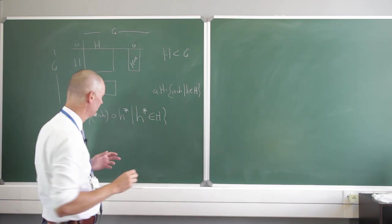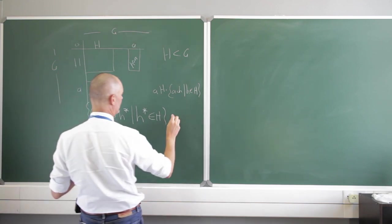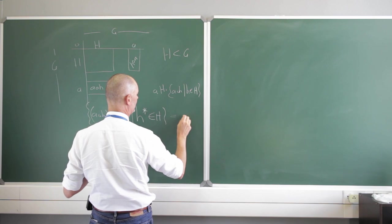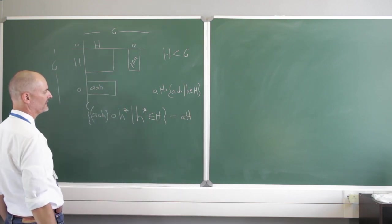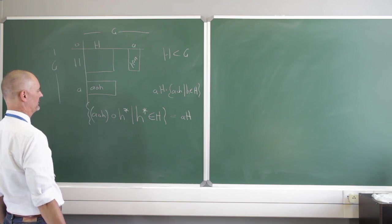The theorem we're trying to state here is this is still nothing other than the left coset. Still nothing other than the left coset. And that looks a bit strange, you know, is that so?